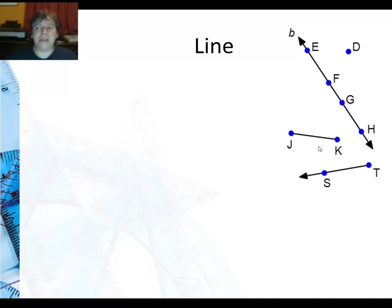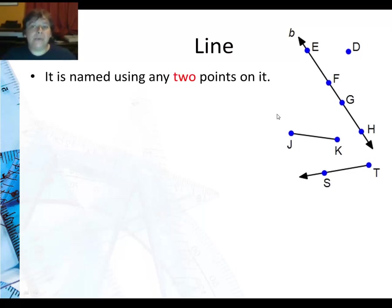So how do we name a line? Well, we can, if you were looking here, what do you think you could use to name the lines? You could say, well, I could do E, F, G, H, but remember we said that the line is the shortest path between two points. So if I use any two points on that line, then that is good enough. And that is how we do name a line. We just use two of the points.